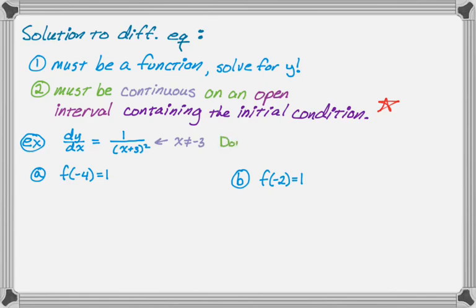So that means that the domain of my solution, which needs to be continuous, is either going to be x is less than negative 3, or x is greater than negative 3. But it can't be both, because I won't get a continuous solution if that happens. So that's what I approach the problem with now. That's in the back of my mind as I solve.